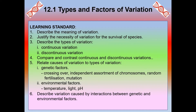Number four: compare and contrast continuous and discontinuous variation. Number five: relate causes of variations to type of variations — genetic factor, which is crossing over, independent assortments of chromosomes, random fertilizations, and mutations. Number two, environmental factor: temperature, light, and pH. Number six: describe variation caused by interactions between genetic and environmental factor.